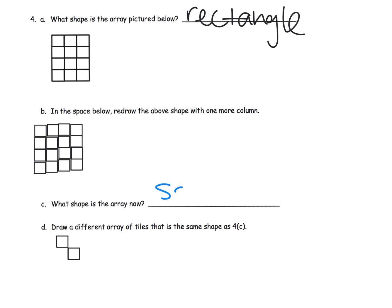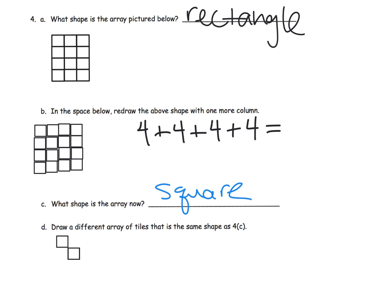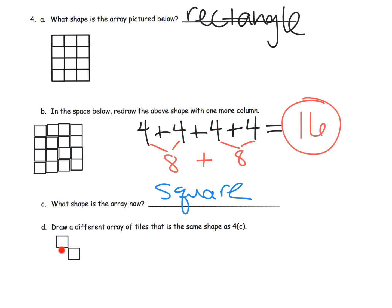No gaps — one, two, three, four. Now what shape is the array? Suddenly it's a square: four by four, four rows of four. Our repeated addition would be four plus four plus four plus four. Using the doubling pattern: four plus four is eight, four plus four is eight, eight plus eight is sixteen. So there are sixteen squares total.